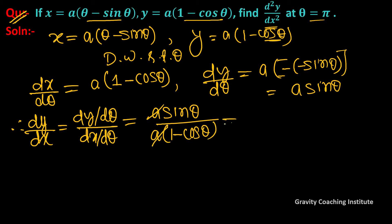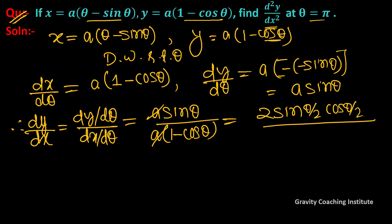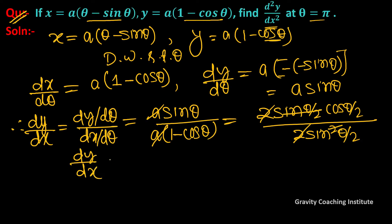Using the trigonometric identity, sinθ = 2 sin(θ/2) cos(θ/2) and 1 - cosθ = 2 sin²(θ/2). Substituting and simplifying, dy/dx equals cot(θ/2).